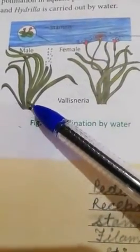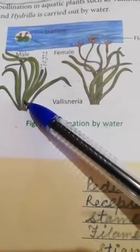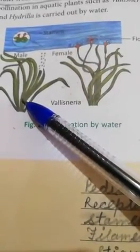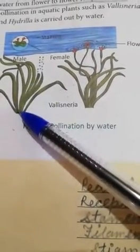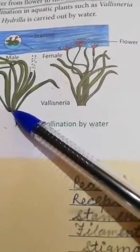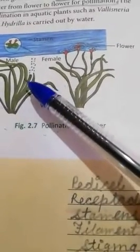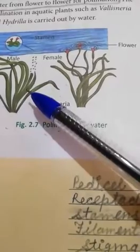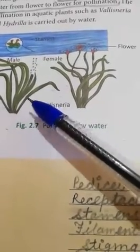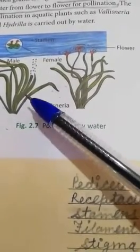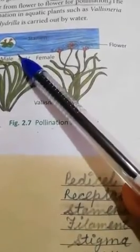Now, look here. Female flower, sorry, male flower. This is the male plant of the valesneria, yes. When the male flower gets mature, what happens? It gets detached or separated and float on water.